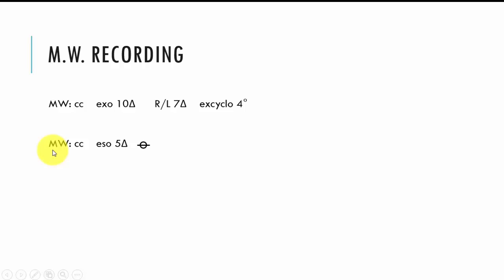Here we have another recording, a different recording, and we have Maddox wing with correction and we have an eso of 5 prism diopters, and then we have this symbol which represents that there was no vertical deviation present. So it just clarifies that the question was asked around vertical deviations and the patient's red arrow was sitting on zero.